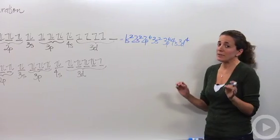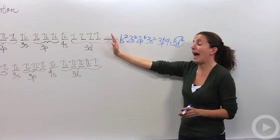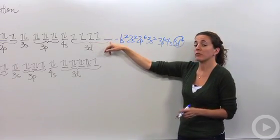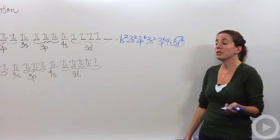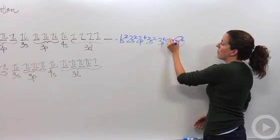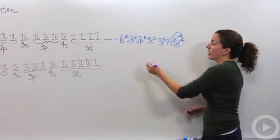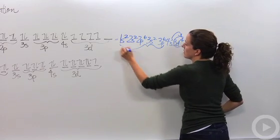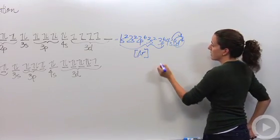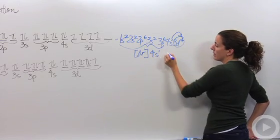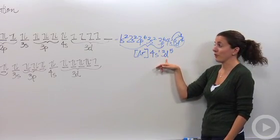From now on, every time you see 3d4, you're going to change it. We do not like 3d4. The d-sublevel is most stable when it's either half full — all the orbitals are filled with at least one electron — or completely filled. Right now we're one electron short of it being halfway filled. So we're going to take one of the electrons in the 4s orbital and move it over to the 3d orbital. We're going to write this as argon, 4s1, 3d5. This is halfway filled, which is pretty stable — much more stable than d4.